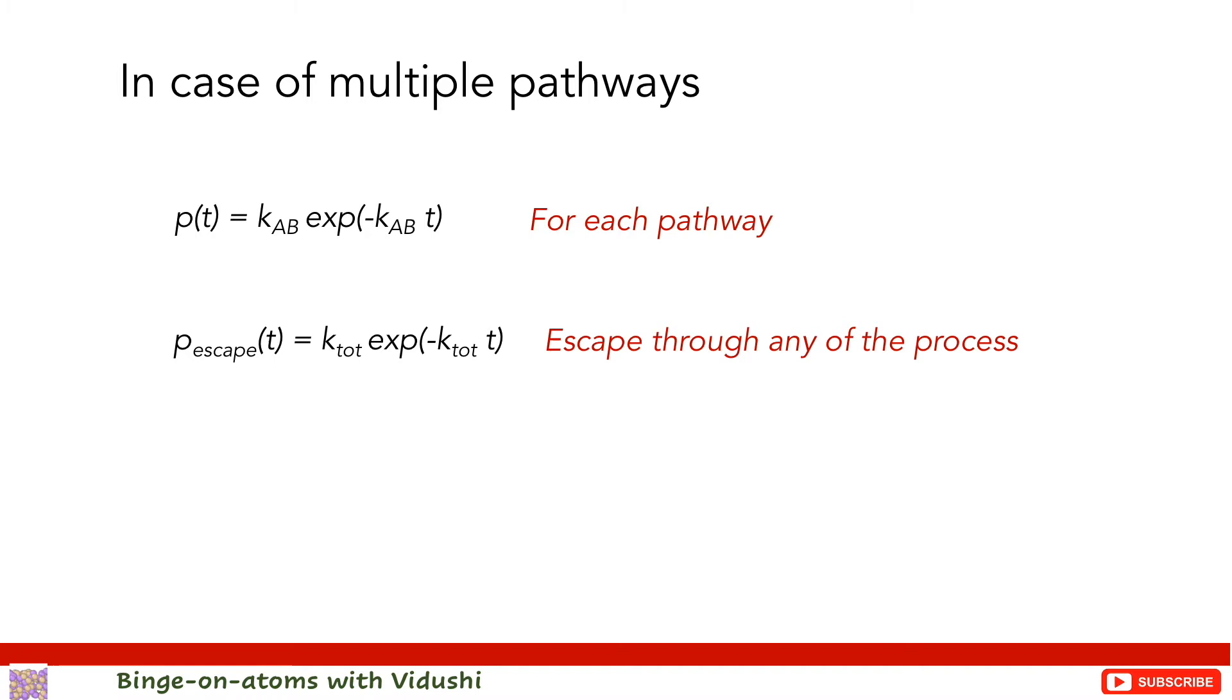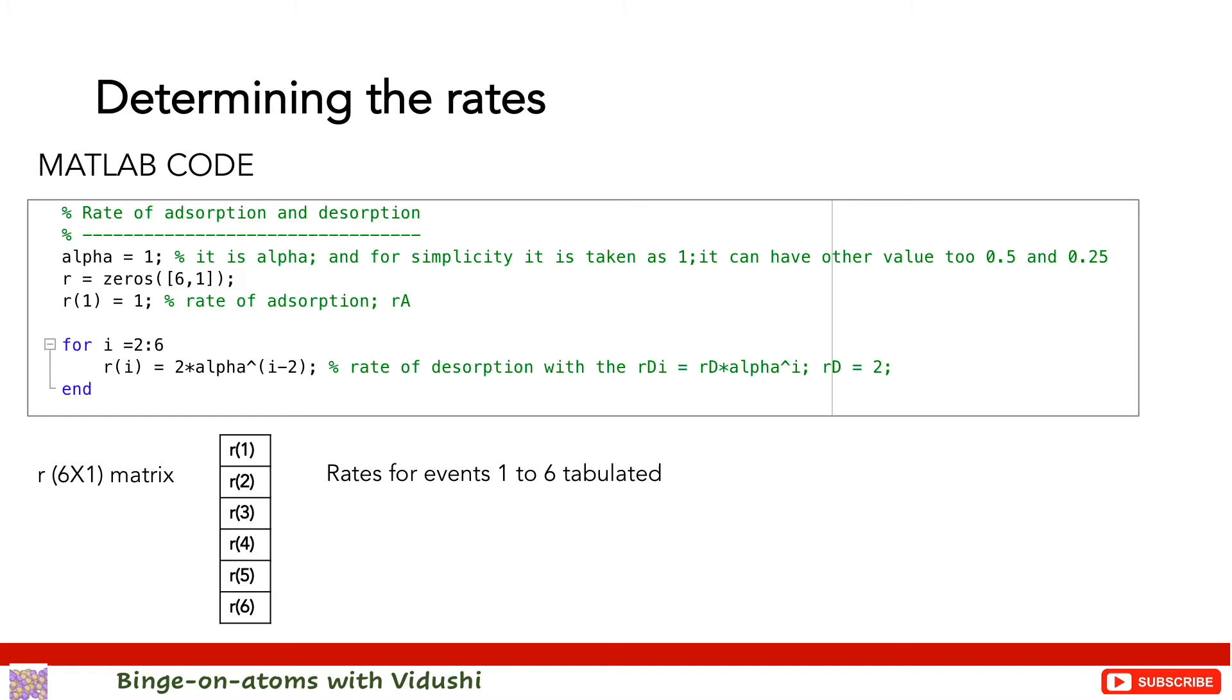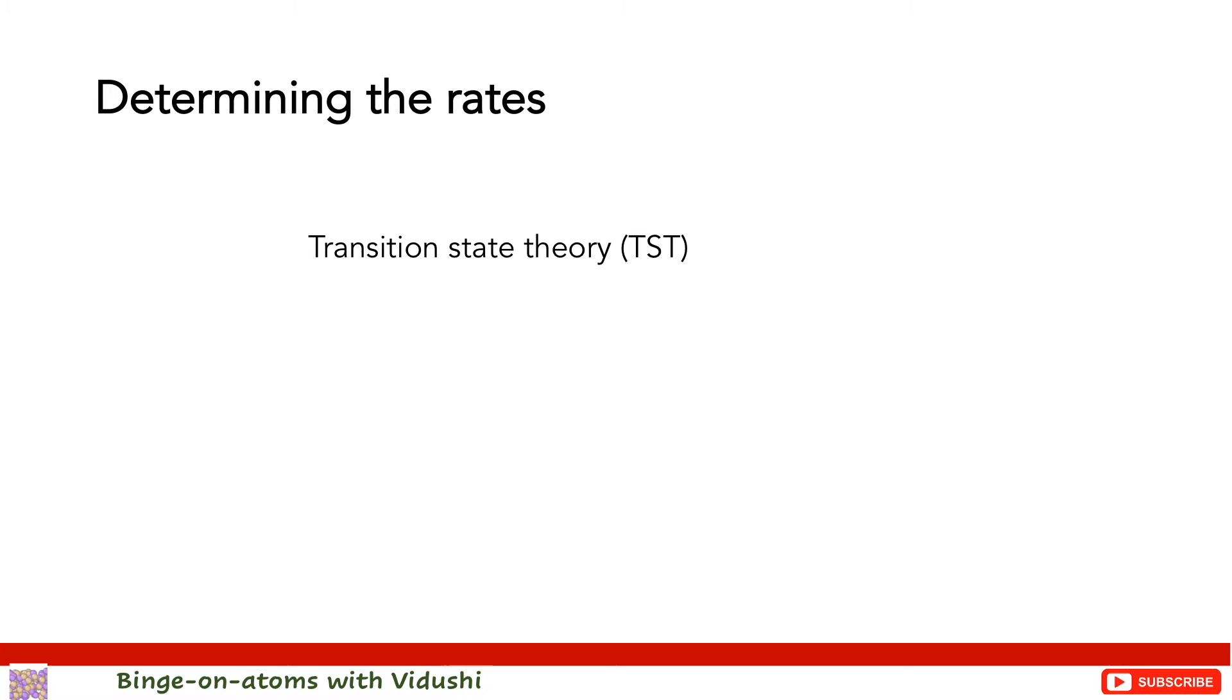I will share a link to a paper explaining this theory in the description section below. Next we will focus on how to determine these rates post-writing a KMC algorithm. As we discussed in our previous video, before starting a Monte Carlo loop we need to tabulate a list of all possible events and their rate constants. One can use transition state theory to compute the rate constants for each pathway. TST is a good method for solid state diffusive events. TST defines rate constants for a KMC algorithm for hopping from state i to state j as the equilibrium flux through a dividing surface separating the two states.